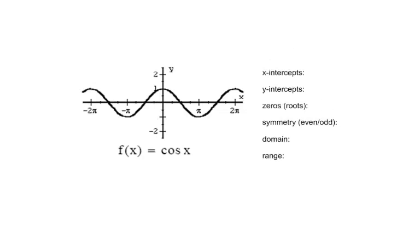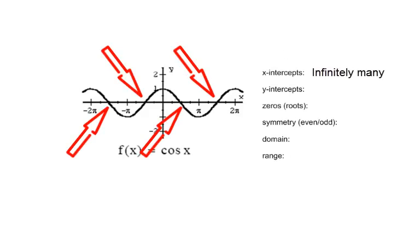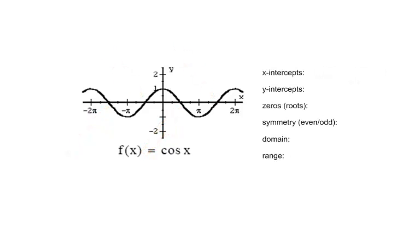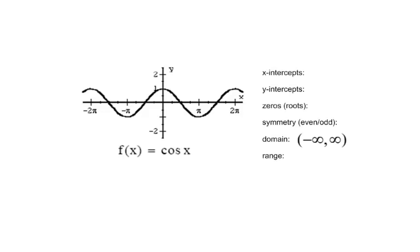The cosine function is a lot like the sine function — it has infinitely many x-intercepts, occurring at pi over 2 units from the point of origin. Notice what's happening along the y-axis: the cosine function is an even function, symmetric to the y-axis. There is one and only one y-intercept: the point (0, 1). The domain is negative to positive infinity, and the range, just like sine, is from negative 1 to positive 1.